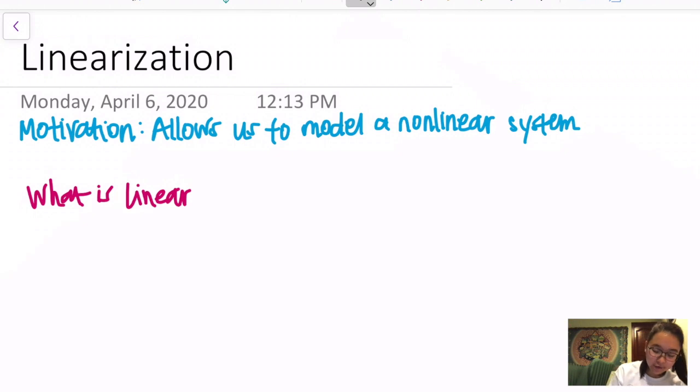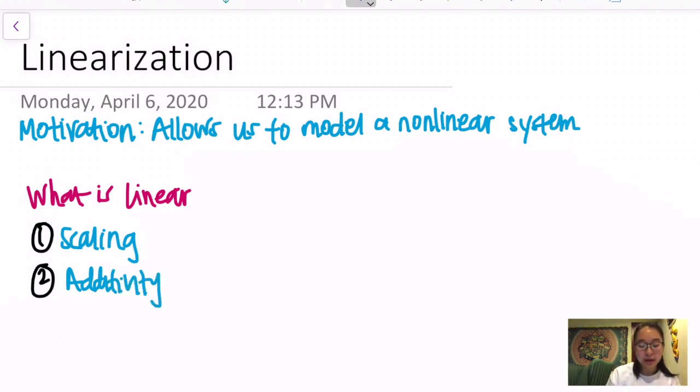Specifically, in order for it to be linear, two traits have to be satisfied. One of them is scaling, and the other one is additivity. Scaling means that if you have a function f(x), and you want to plug in the value a*x, then that value evaluated with the function f should be equal to a*f(x), given that a is a constant. You should be able to pull that constant out of the function evaluation.